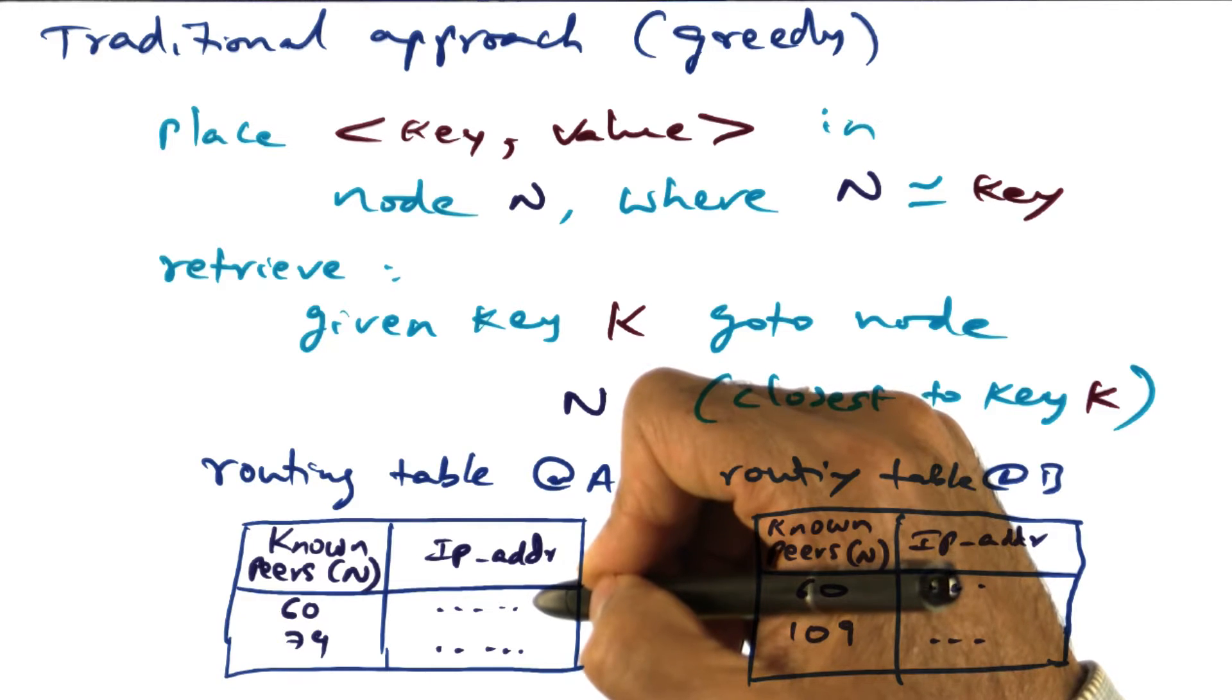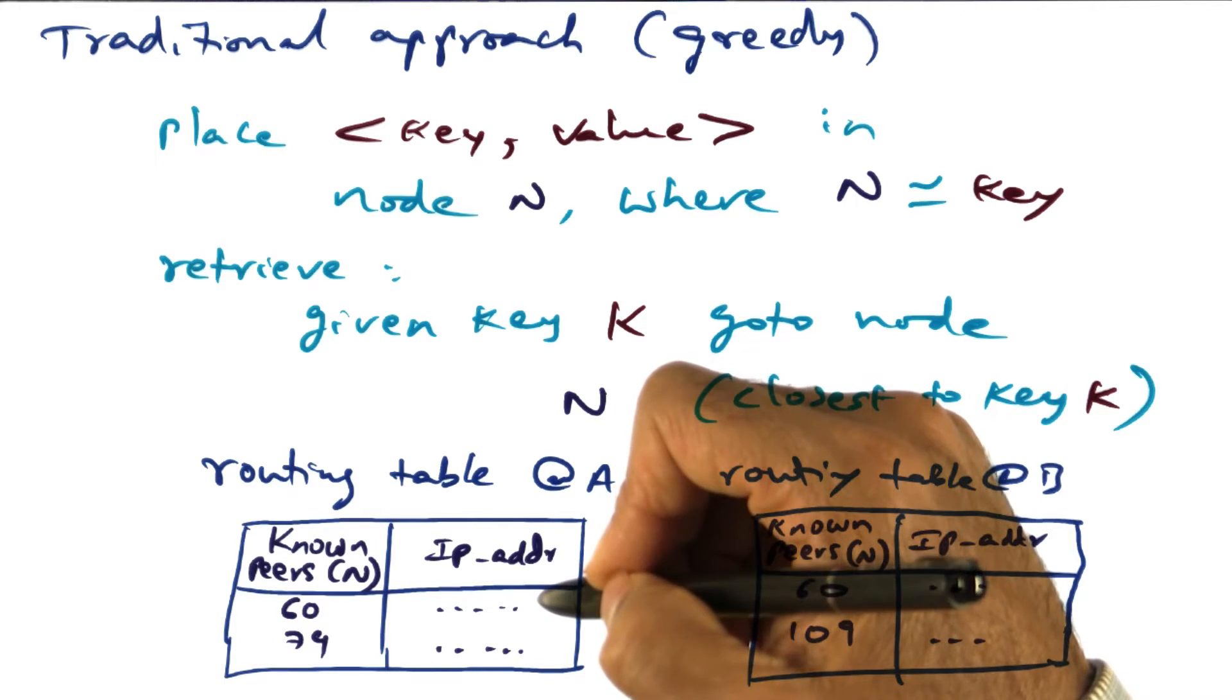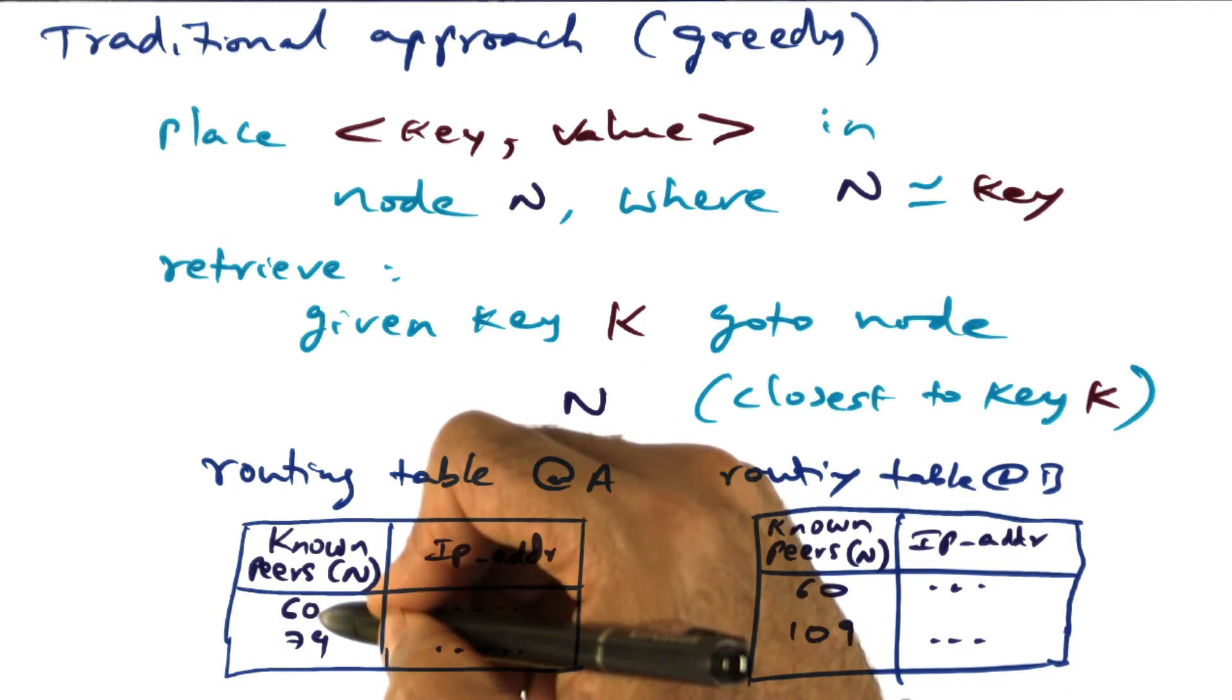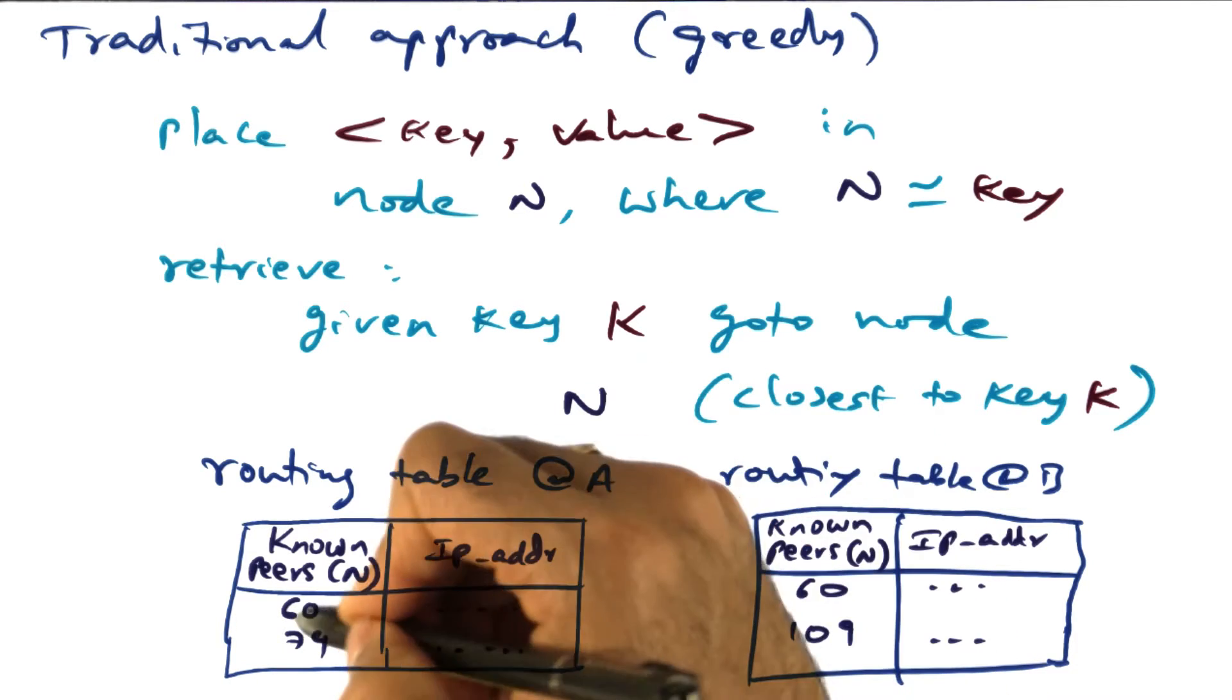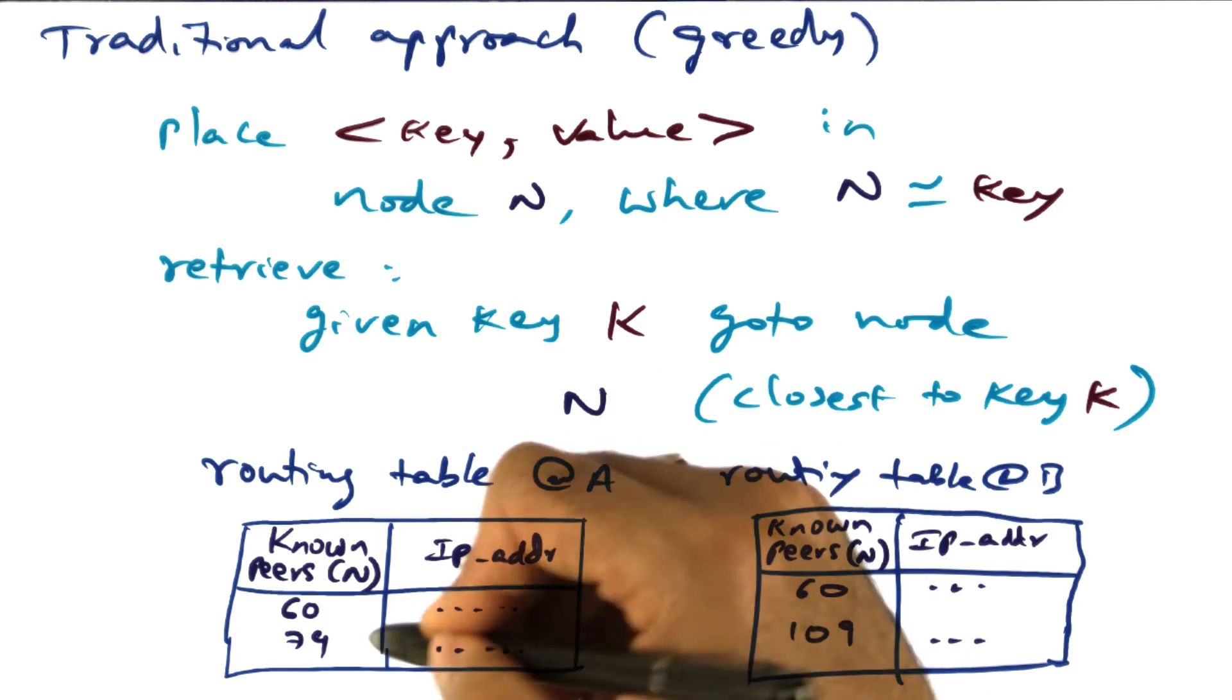Remember that IP address is the only thing that the operating system is going to understand and therefore I know how to communicate with node 60 because I can give the IP address that corresponds to node 60 when I want to send a message to node 60.